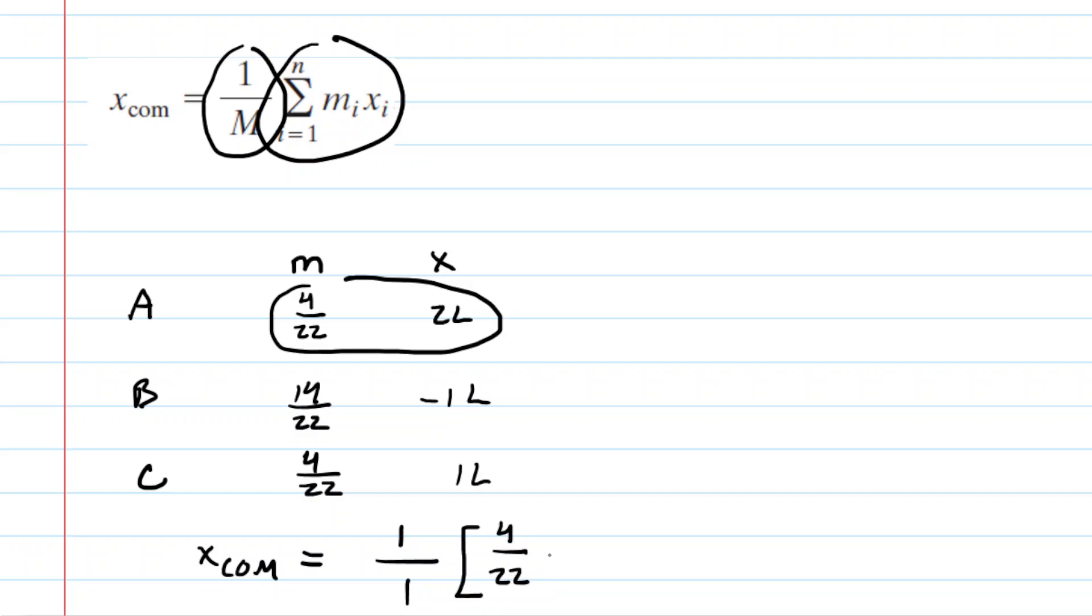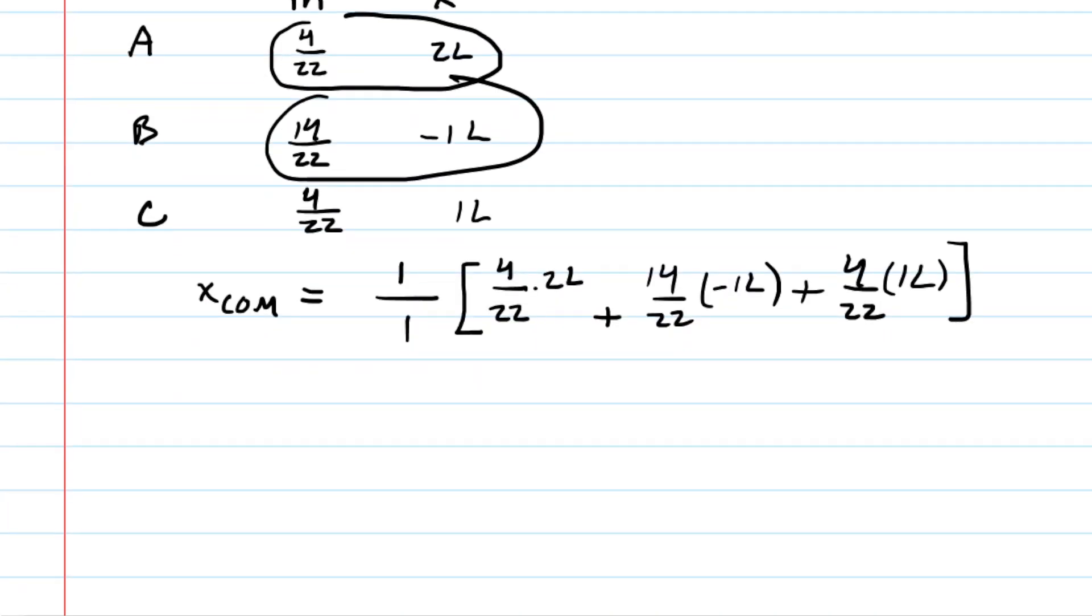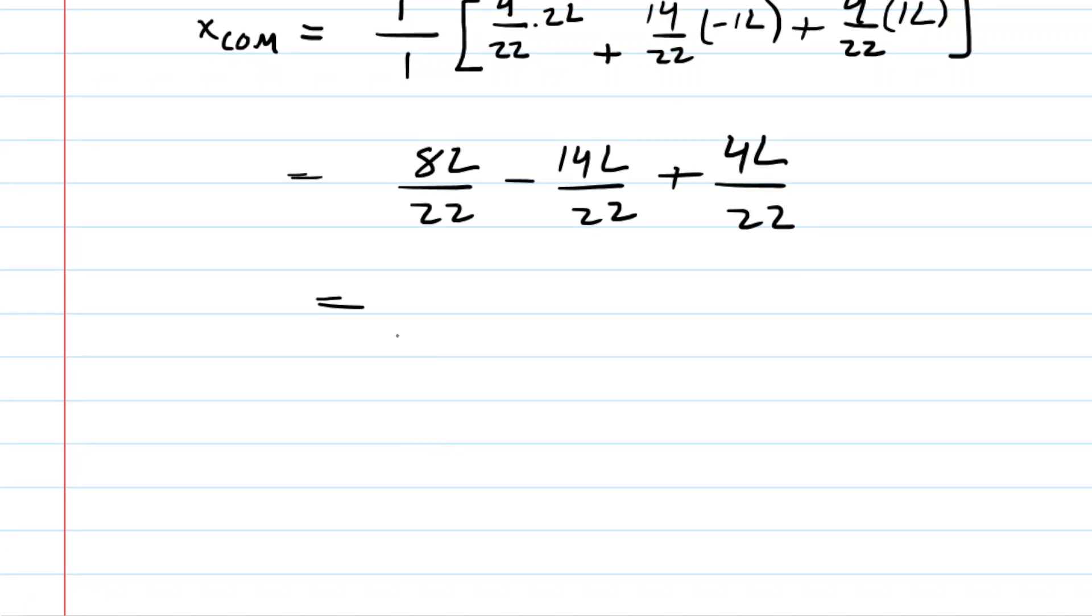Very simple. You're just multiplying the mass by the x-coordinate for each rectangle. So you would have 4 over 22 multiplied by positive 2L plus, and then 14 over 22 multiplied by negative 1L, and so on. So then we would have plus 4 over 22 multiplied by positive 1L. Now we just need to simplify this. 1 divided by 1, of course, is 1. So now we just have, multiplying the fractions, 8L over 22 minus 14L over 22 plus 4L over 22. Let's add the numerators together.